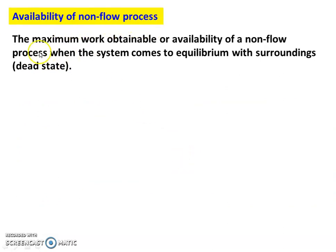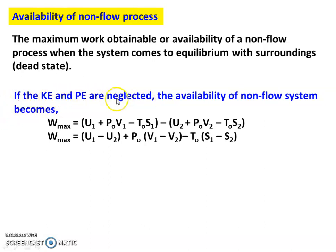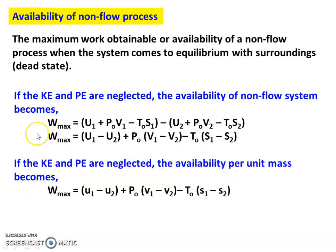For the availability of a non-flow process, the maximum work obtainable when the system comes to equilibrium with the surrounding — neglecting kinetic and potential energy — becomes: W_max = U1 + P0·V1 − T0·S1. Per unit mass, W_max = (u1 − u2) + P0·(v1 − v2) − T0·(s1 − s2). Both the availability of non-flow and flow process equations must be remembered for solving problems.